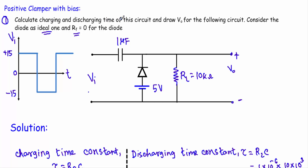Why do we need to calculate the charging and discharging time of the circuit? The clamp circuit works on the basis of charging and discharging time of the capacitor. If the charging time of the capacitor is much much smaller than the discharging time, and the circuit consists of a capacitor, diode, and resistor, we may expect that circuit will act as a clamper circuit. And since the diode is in upward direction, that means the circuit will be a positive clamper.